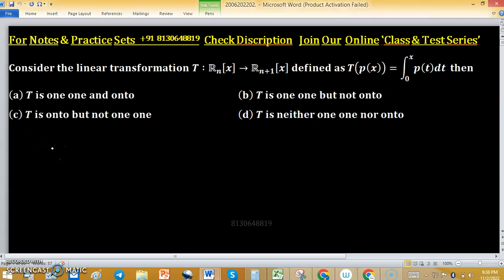Consider the linear transformation T defined from R^n[x] to R^(n+1)[x] by the given structure. Option a: T is one-to-one and onto. Option b: T is one-to-one but not onto. Option c: T is onto but not one-to-one. Option d: T is neither one-to-one nor onto.